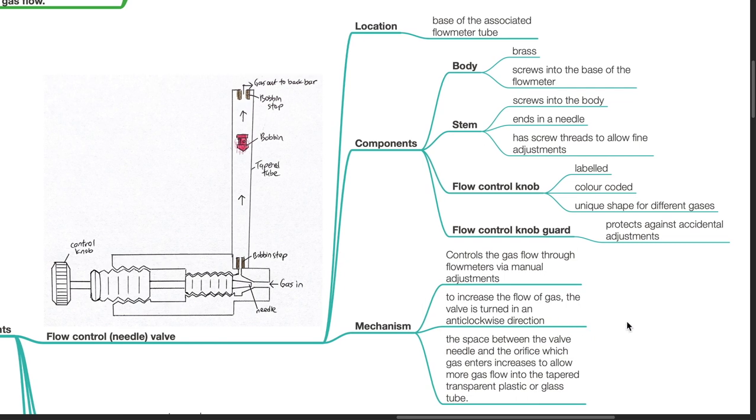Components include the body which is made of brass, screws into the base of the flow meter. The stem screws into the body and ends in a needle. It has screw threads to allow for fine adjustments.